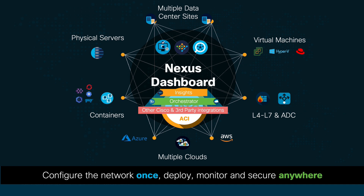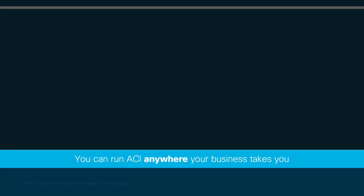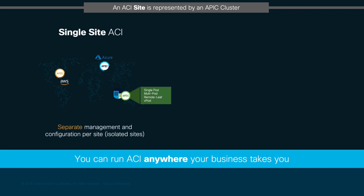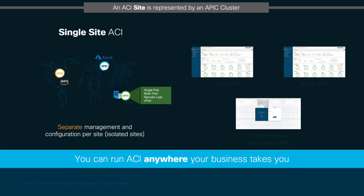Let's now take a look at how ACI Anywhere and the Nexus Dashboard can work together to accomplish this. A single ACI site is represented by an APIC or APIC cluster, which can reside either on-prem or in the cloud. However, if you have multiple ACI sites running in different data centers or clouds, you may potentially end up managing different APICs in different parts of the world, along with their data center and cloud interconnect configurations.